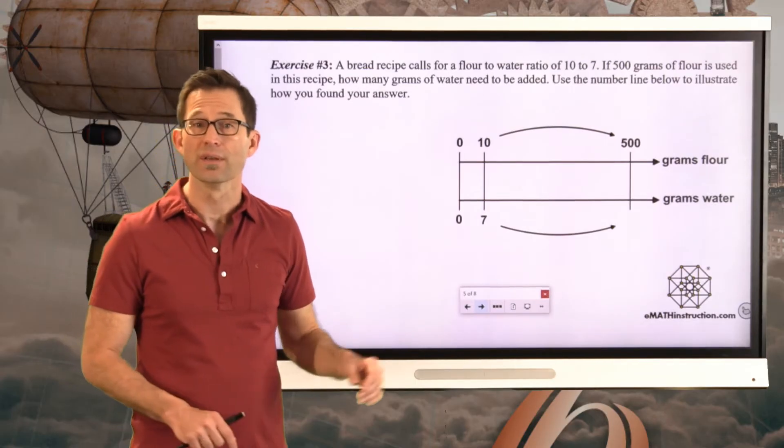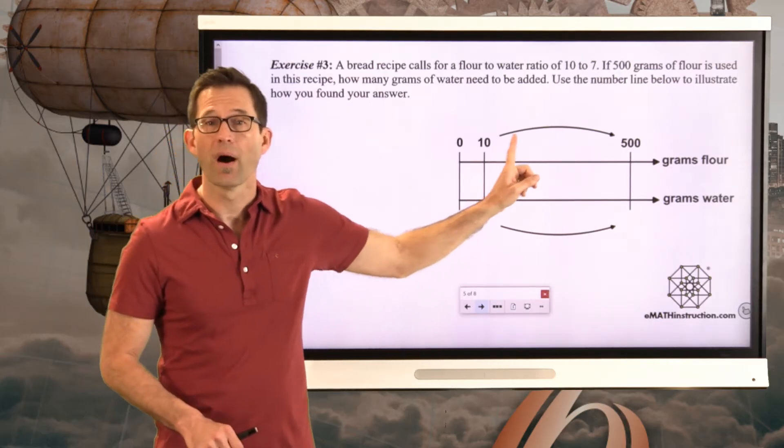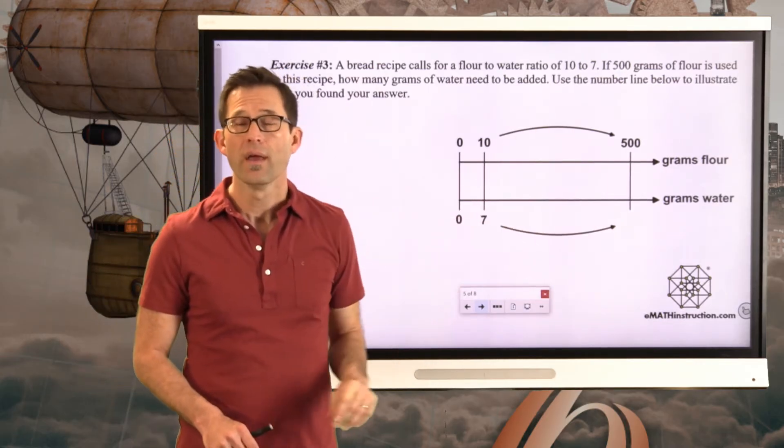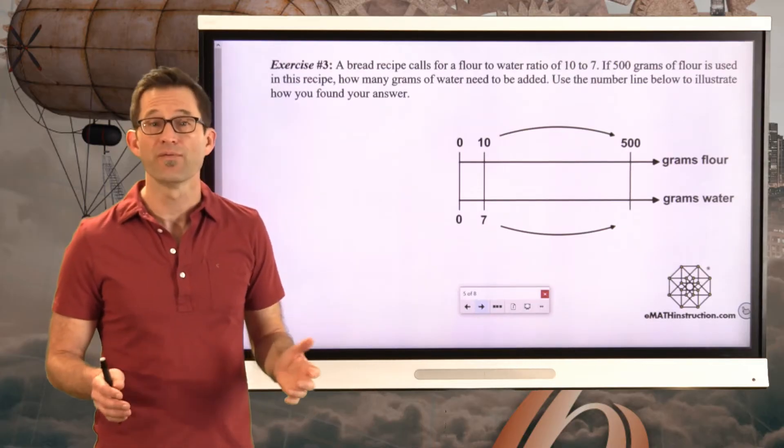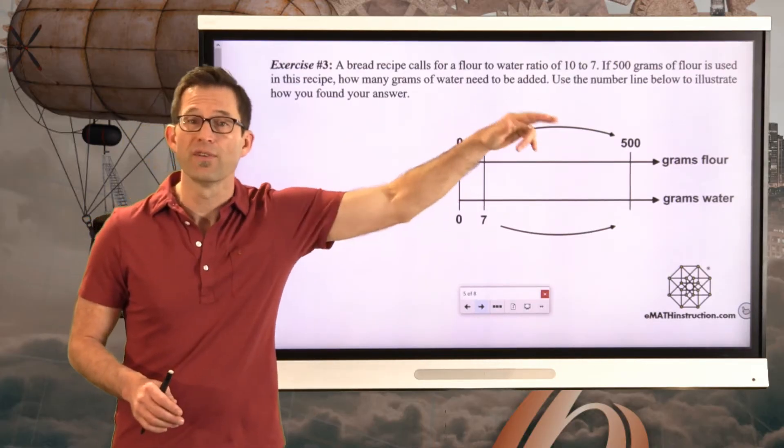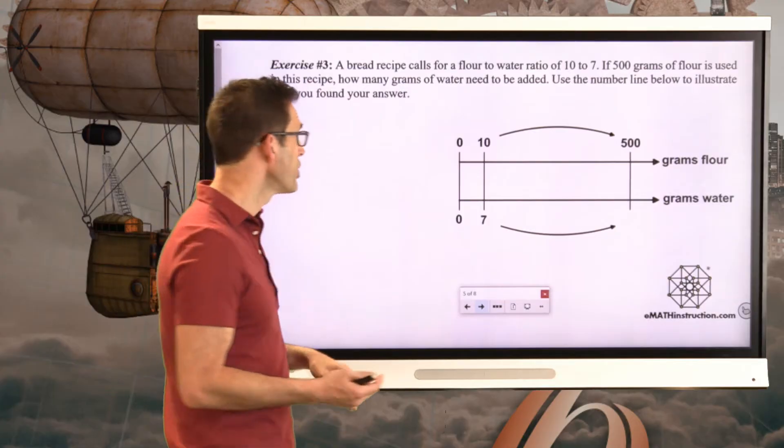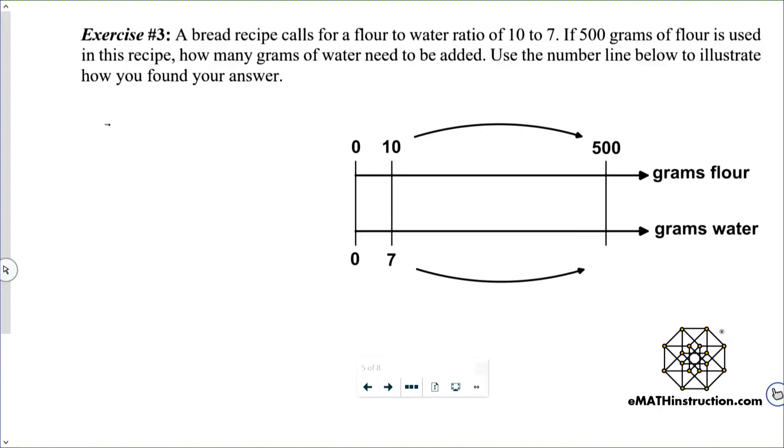Well, the question is, what would we have to scale 10 by to get up to 500? Now, for some people, it's obvious that the answer there is 50. We would have to multiply 10 by 50 to get 500. But if you're not sure, of course, what you'd then want to do is 500 divided by 10. That's going to give me 50. And that's my scaling factor. 500 divided by 10 gives me my scaling factor. So then we have to multiply by 50 as well here.